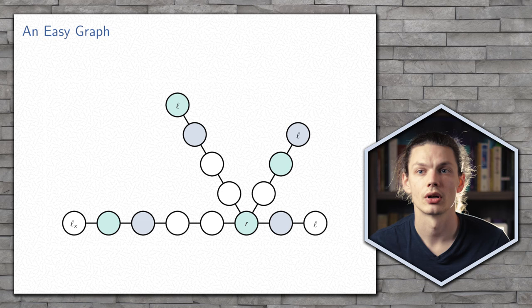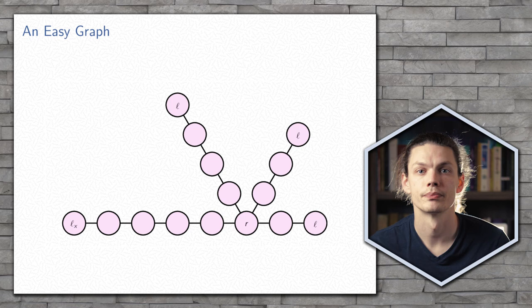All of the collect messages are arriving back at the root at different times, and there are no collisions. And then once the root has all of the messages, they can be broadcast out, and everybody becomes informed.